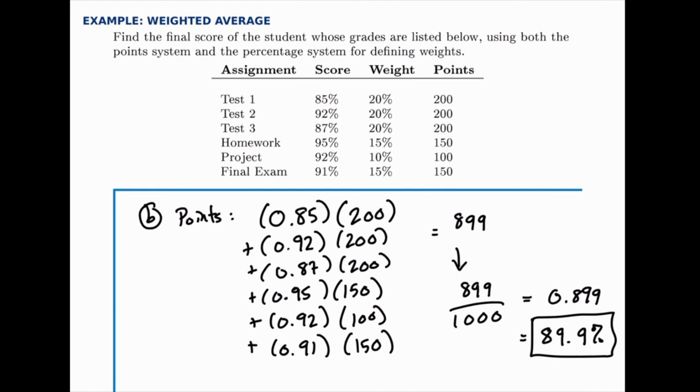So either way you do it you're using the same values, and this is how you do a weighted average whether you're given the weights as percentages or as points out of a total that you could earn.